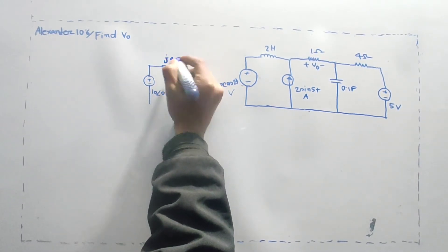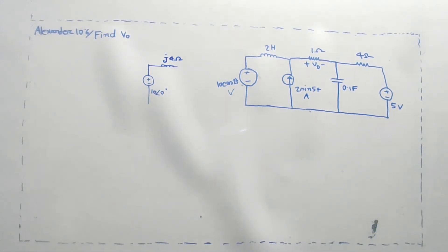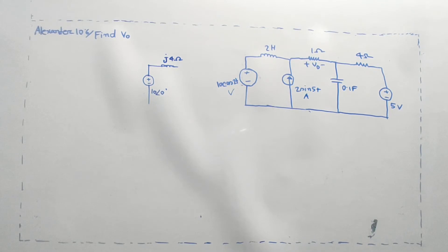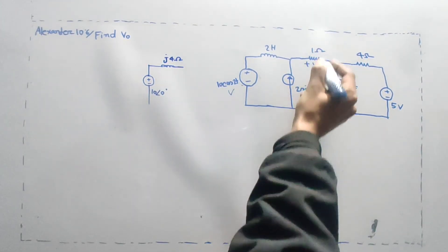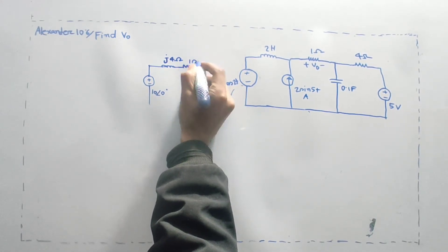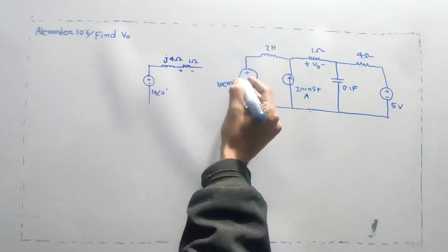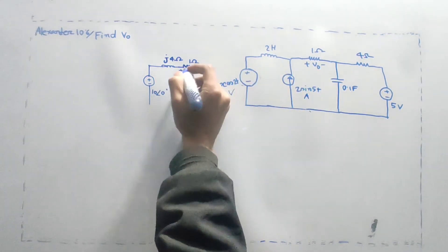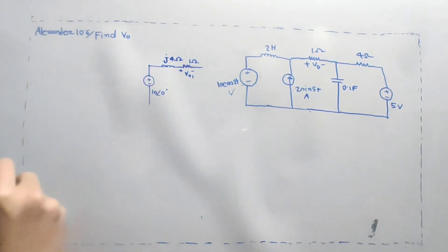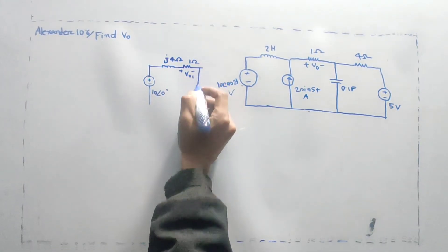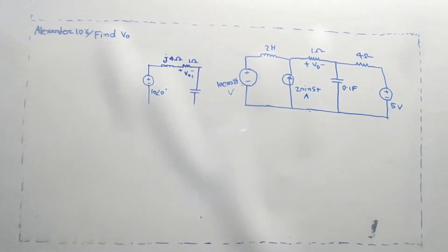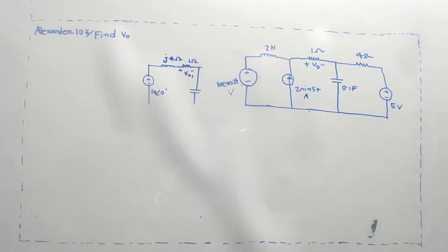Let's work through this circuit. As soon as we connect the active device, we have a part of the active action. We take the other source as passive — we deactivate it. The capacitor impedance is 1 over j omega C. With omega equal to 2 and C equal to 0.1, this gives minus j5.